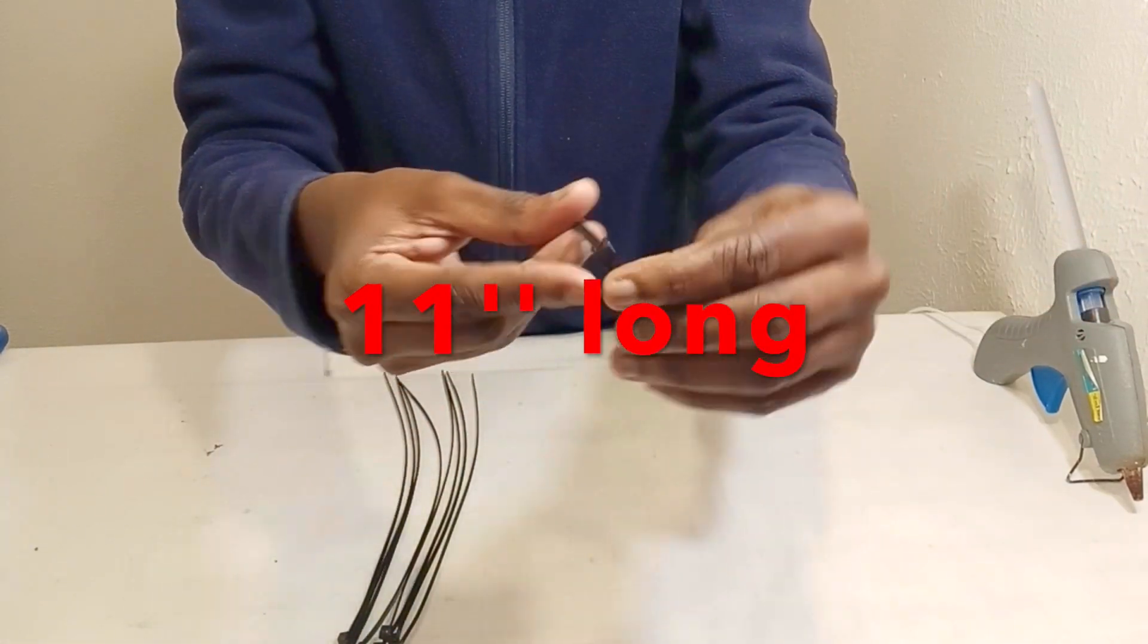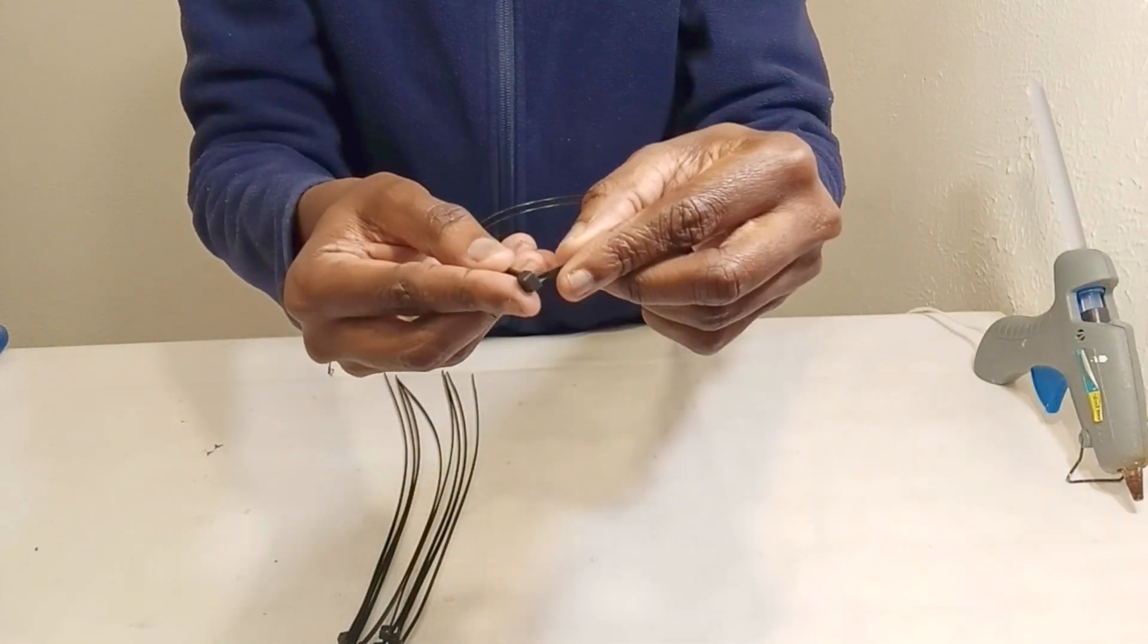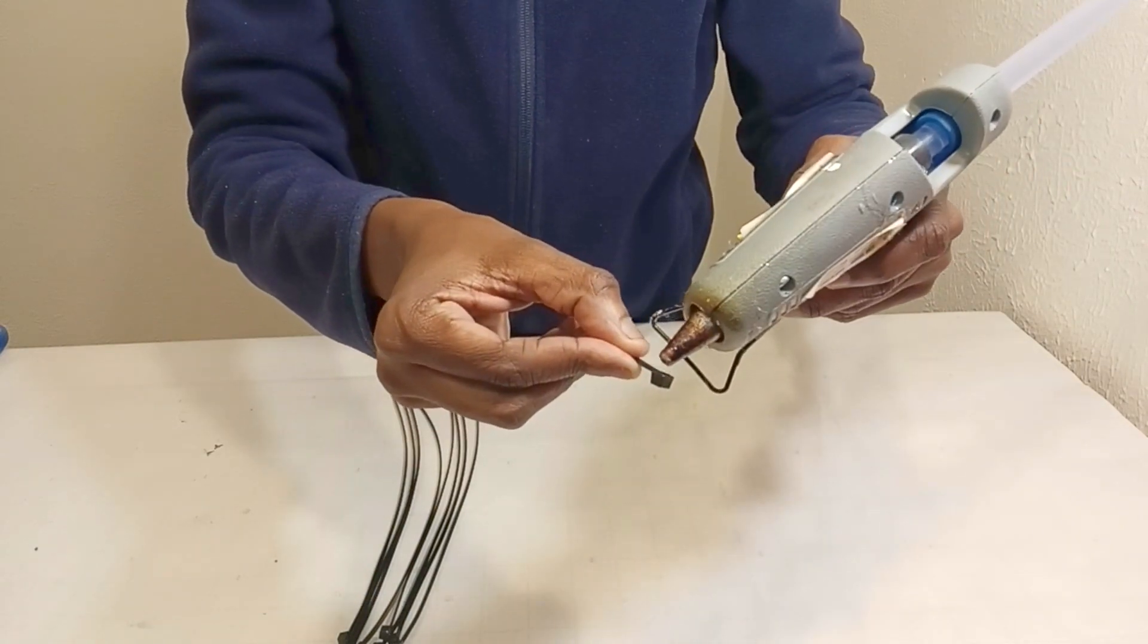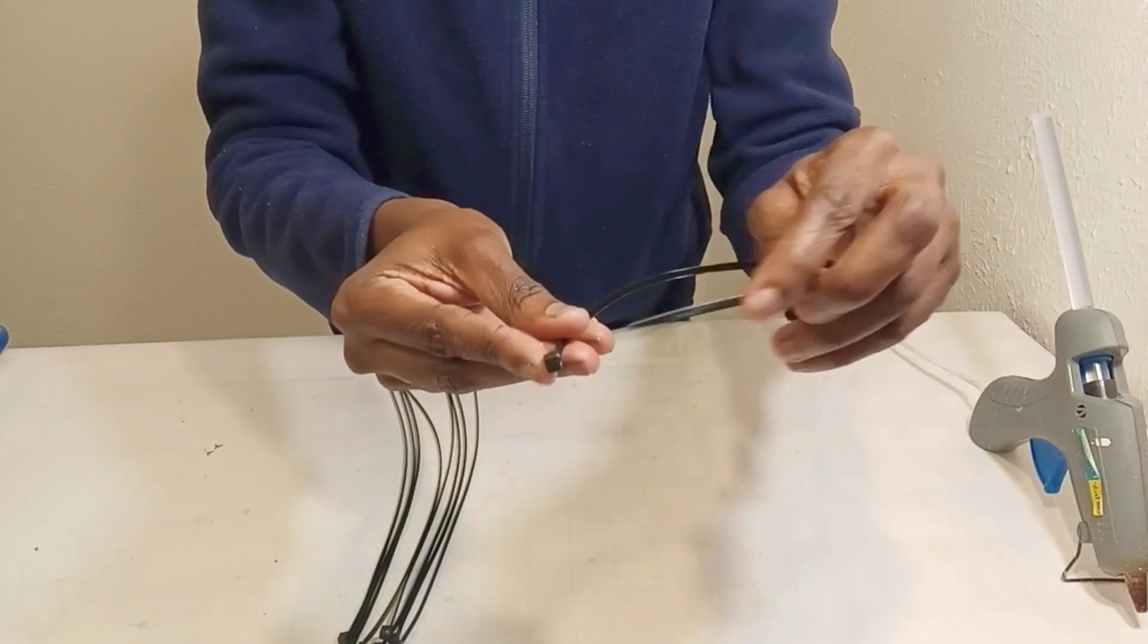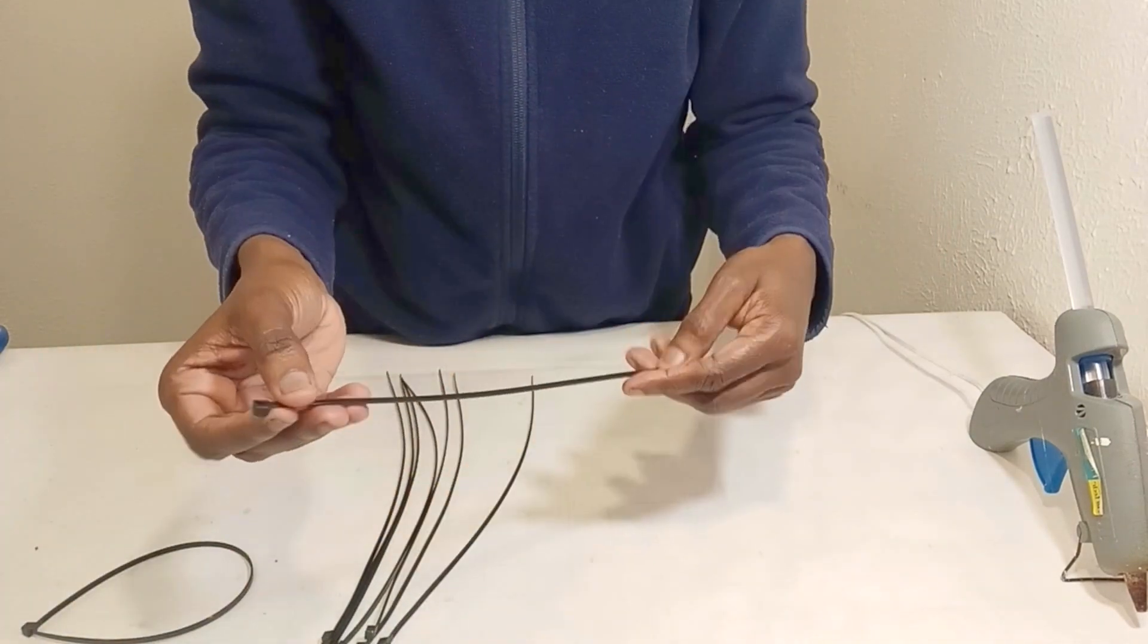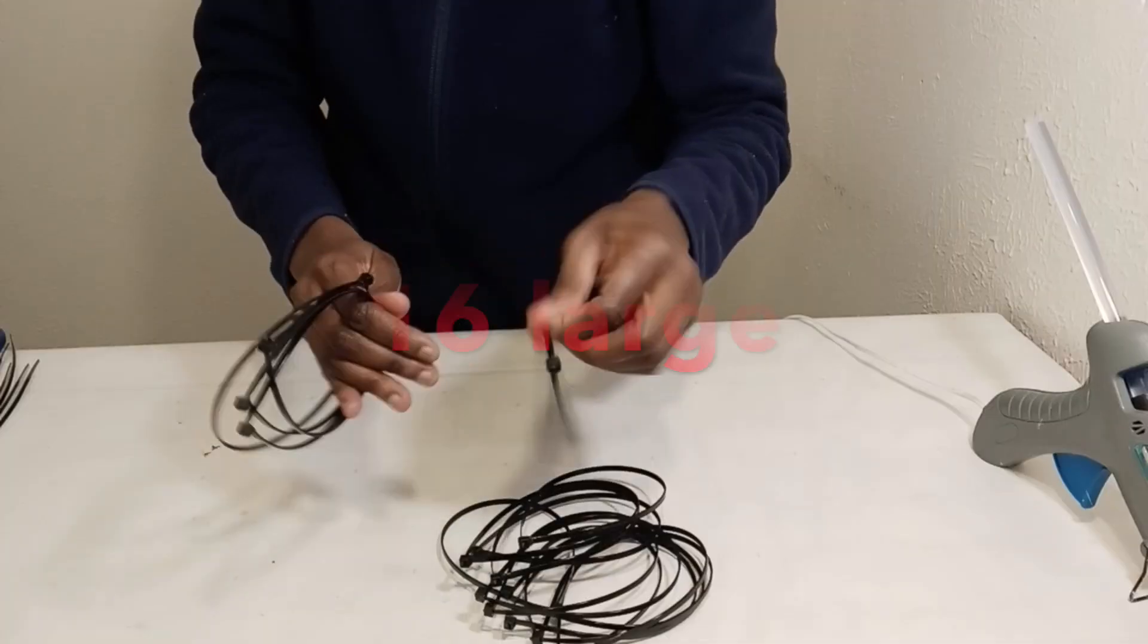I'm gluing the zip tie ends together to create my design. I'm basically placing it into that little hole that you would feed the zip tie through and I'm gluing it together. I have 16 large pieces that I will be gluing together.